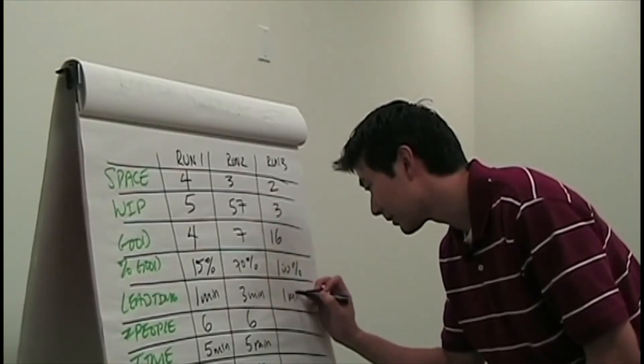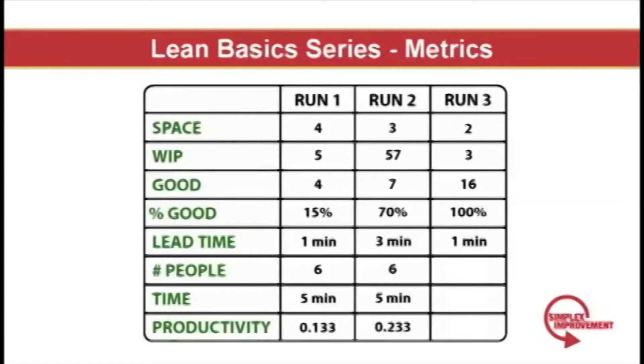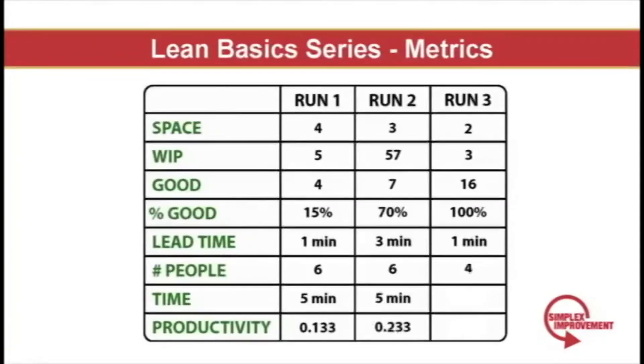Lead time was one minute. It was predictably one minute as each plane flowed through. Number of people in the system, four. They ran again for five minutes. And their productivity, which is good parts divided by people divided by time, is 0.8.